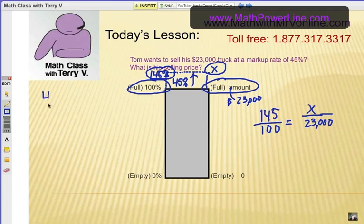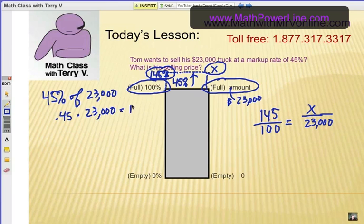Cross multiply and solve. Or, you could find 45% of the $23,000, which is .45 times $23,000. That would be the markup amount. And then you would add that on to the $23,000 original cost of your truck. That would be two steps. The proportion is one step.